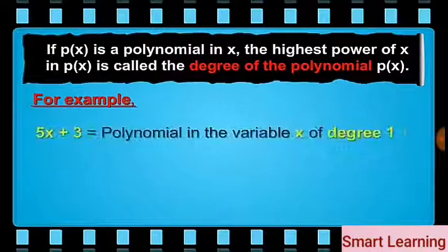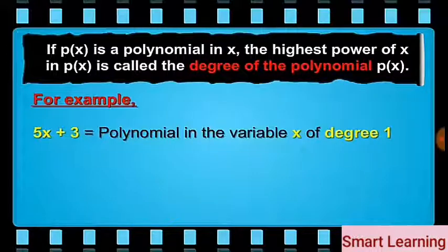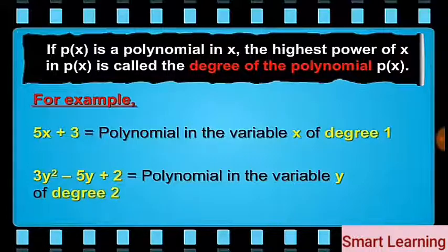For example, 5x plus 3 is a polynomial in variable x of degree 1, as the highest power of the variable x is 1. Similarly, 3y squared minus 5y plus 2 is a polynomial in variable y of degree 2, as the highest power of the variable is 2.